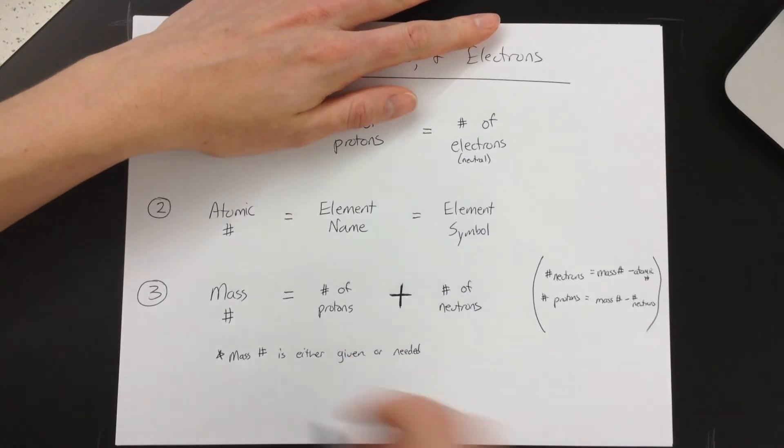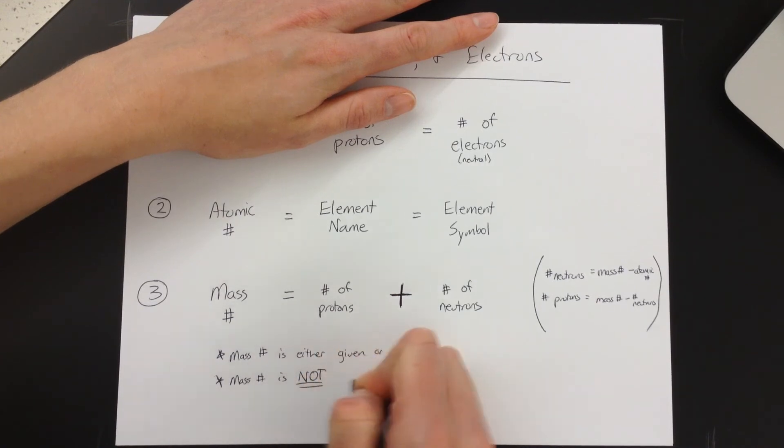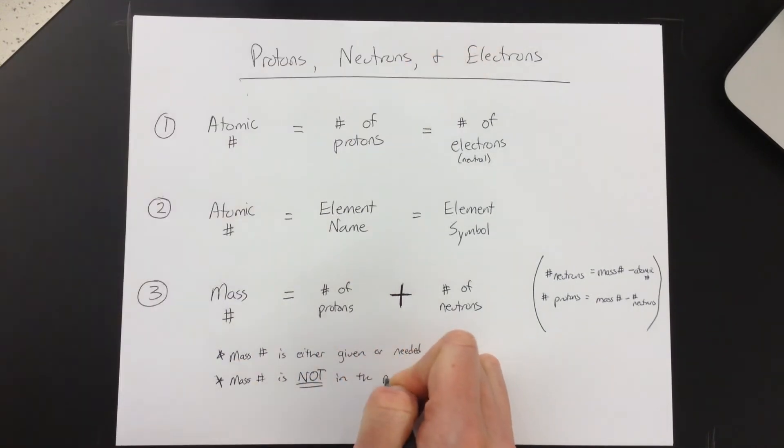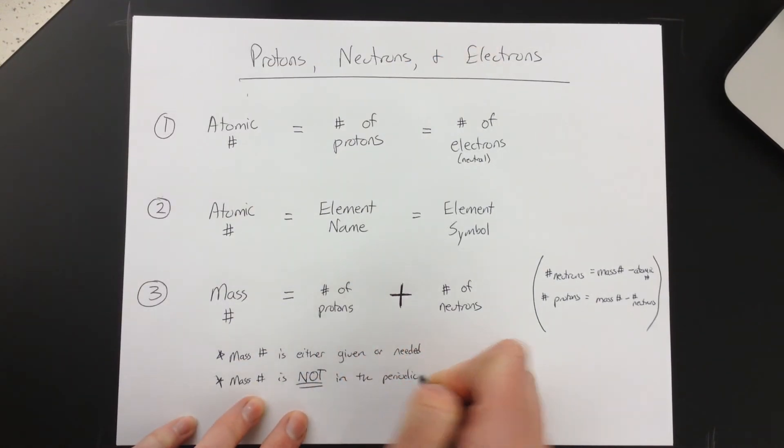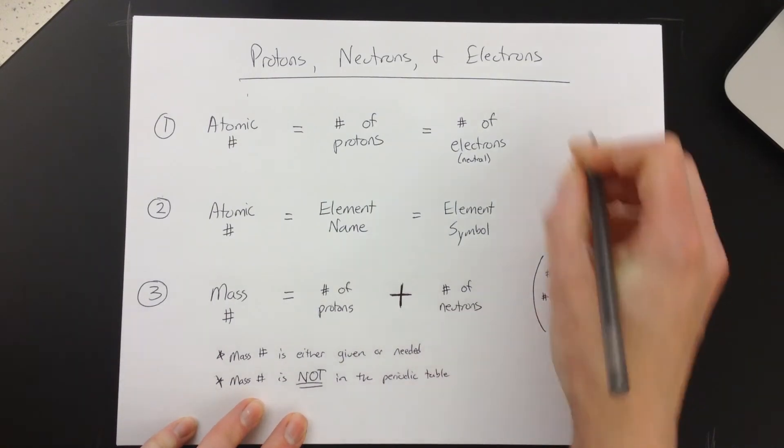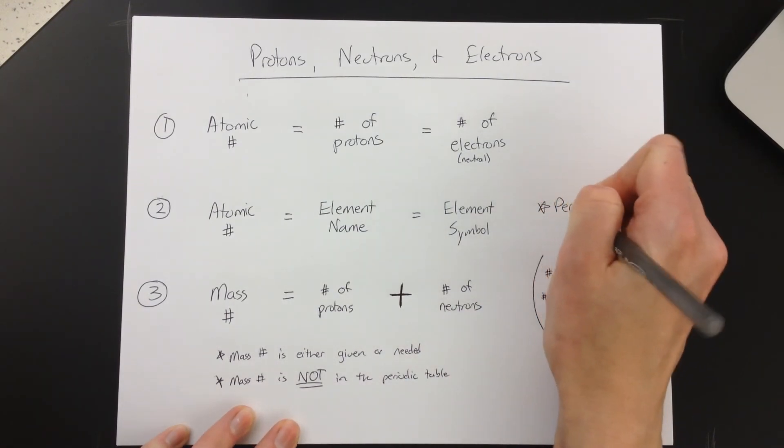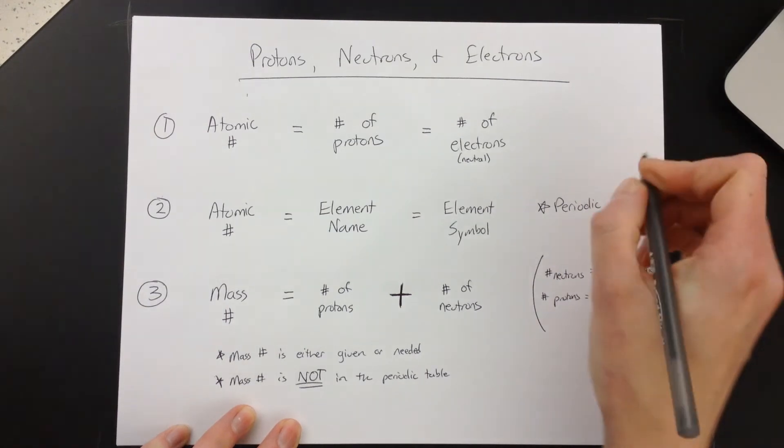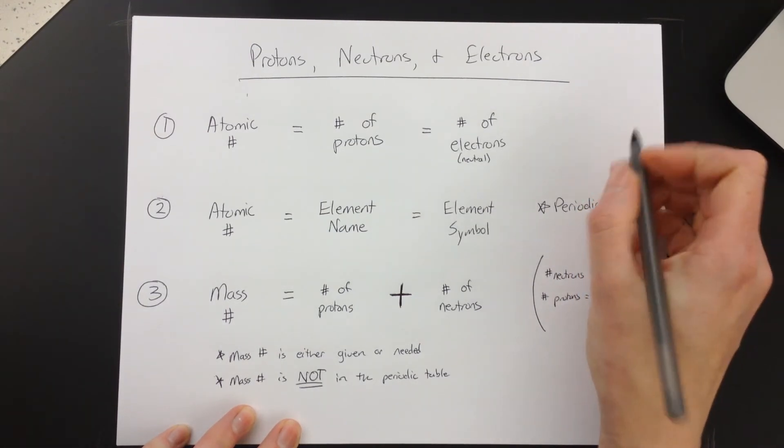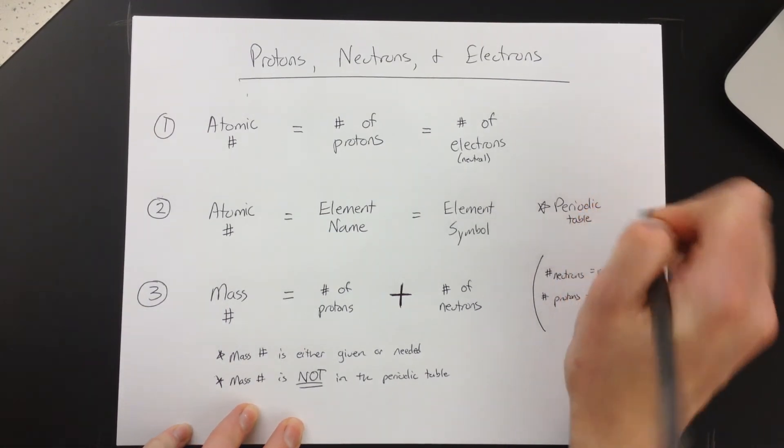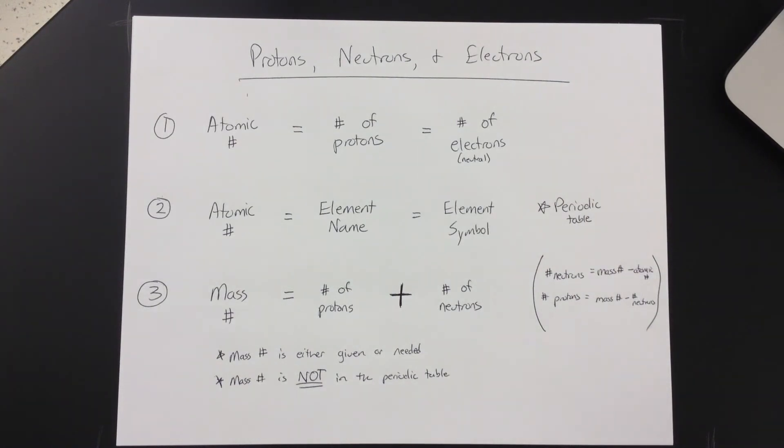The last thing that we have to say is that the mass number is not in the periodic table. You can use the periodic table here to get from the mass or the atomic number to the element name or the symbol, but you cannot use the periodic table to get the mass number. It's not in there.